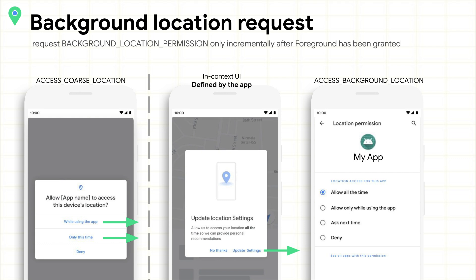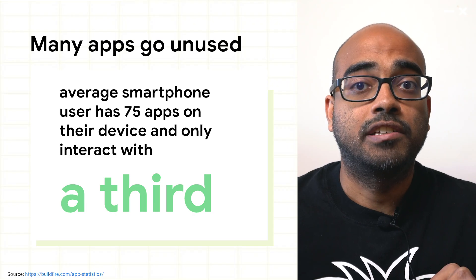For apps targeting Android 11, we've also removed the ability to grant the background location permission from an in-app dialog. To obtain the permission, apps must clearly explain the features that require background location via an in-context UI. This UI should explain why a particular feature needs background location access. If the user chooses to permit access, they are directed to the system settings to complete the process. It's important to note that even after an app is granted the background location permission, users can change their mind and deny access from the settings UI.